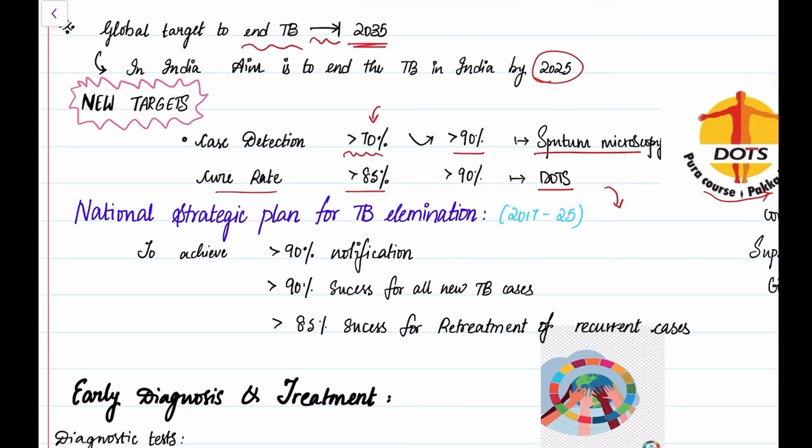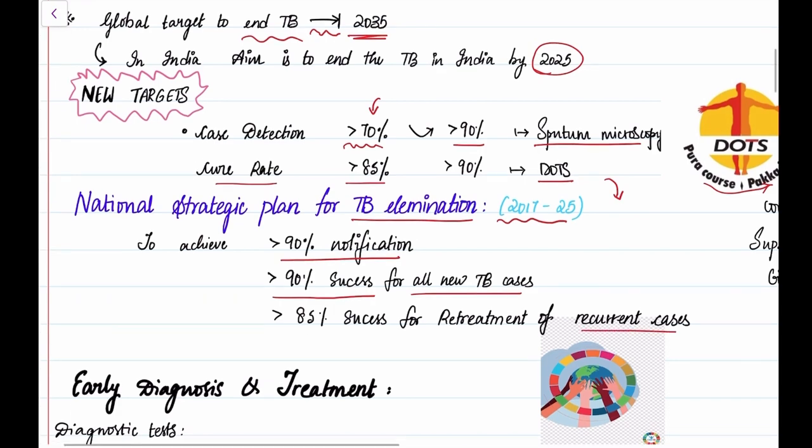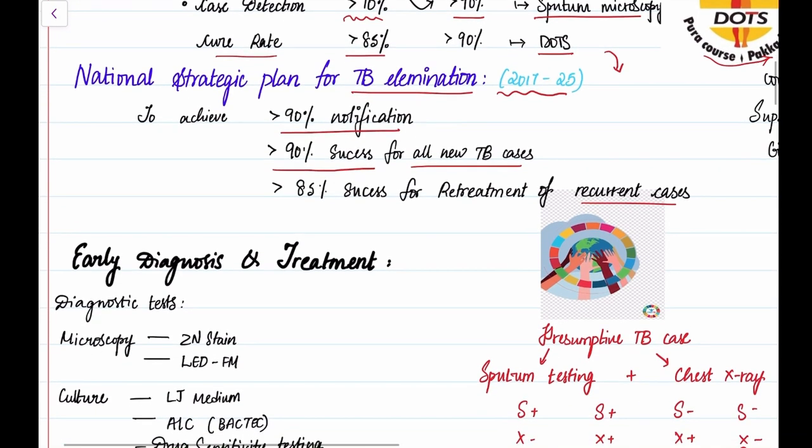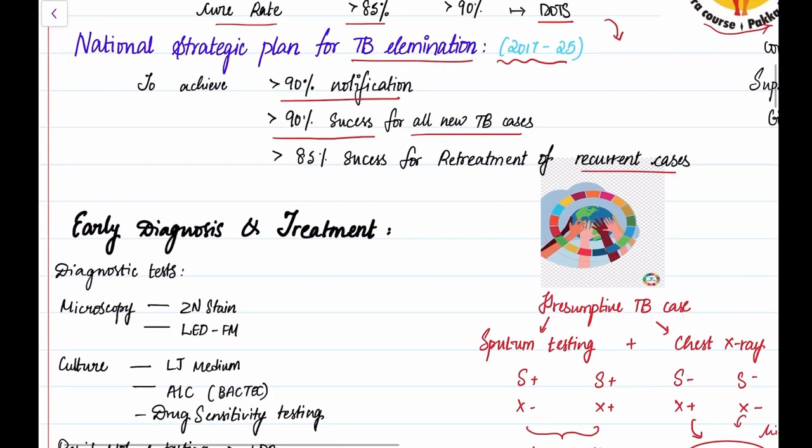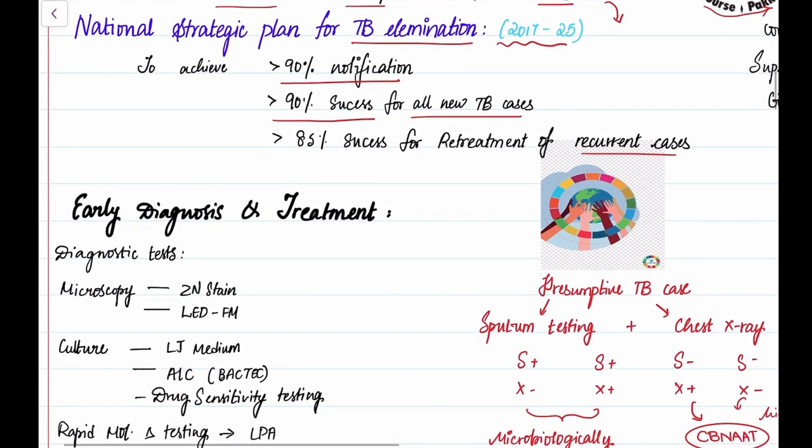The National Strategic Plan for TB Elimination, the end TB strategy 2017-25, is to achieve more than 90% notification of all TB cases, more than 95% successful treatment for all new TB cases, and more than 85% success rate for retreatment of recurrent cases. For any communicable disease in National Health Program, the first primary strategy is early diagnosis and treatment, same as for TB.